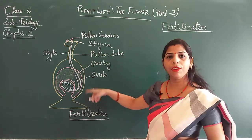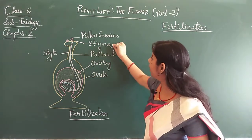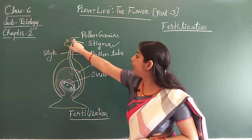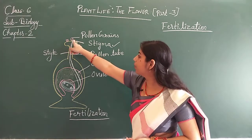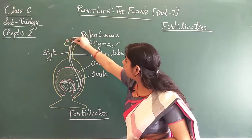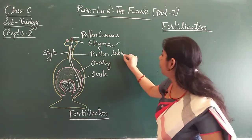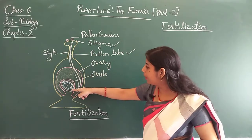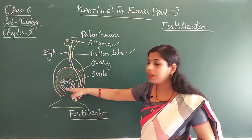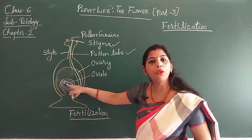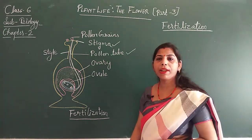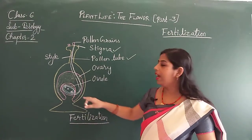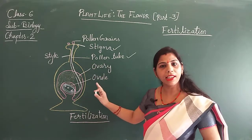Now just see the figure here. I have drawn the female part of the flower. This part is known as the stigma. When the pollen grains fall on the stigma, this pollen grain grows into a pollen tube, and this pollen tube carries the male gamete to the ovary. Through the ovary it goes to the ovule, and in the ovule the egg cells are present, where the pollen grains fuse with the egg cells. This process is known as fertilization.